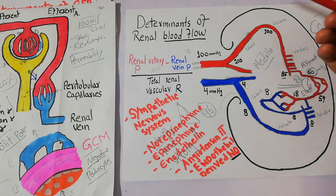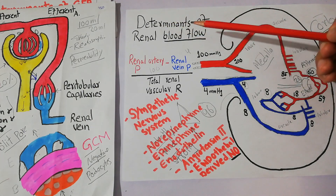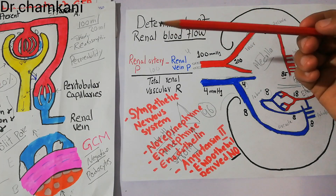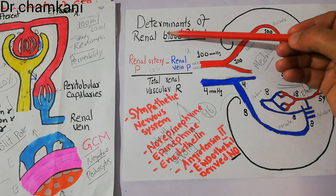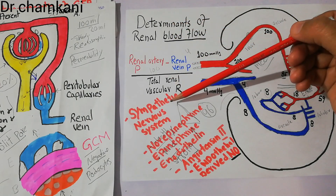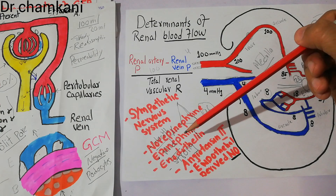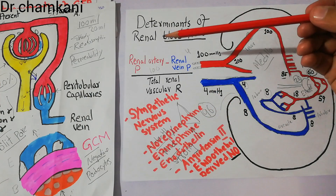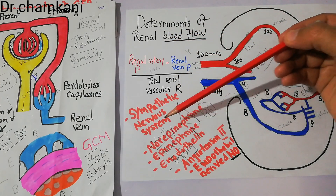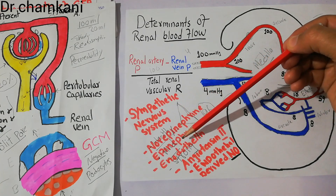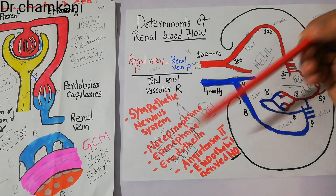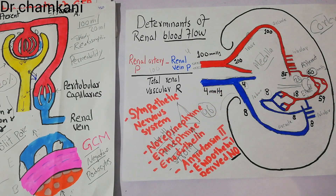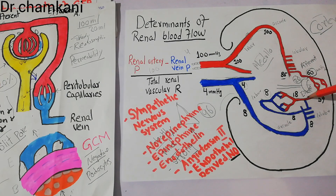So far we have been talking about the determinants of renal blood flow and different factors which affect it. We have discussed the sympathetic nervous system, norepinephrine, epinephrine, endothelin, and angiotensin, and almost all of these factors constrict the renal vasculature, especially the afferent arteriole and the efferent arteriole.